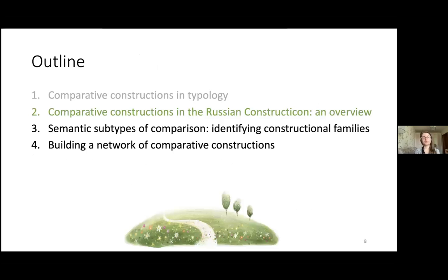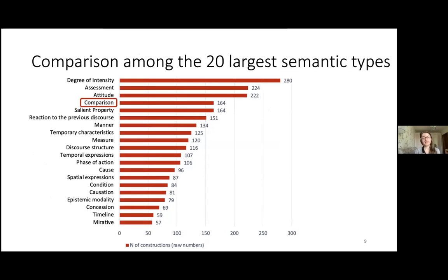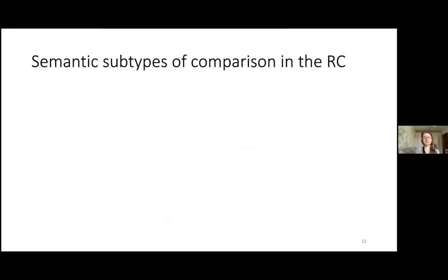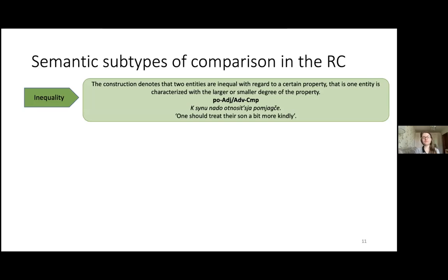Moving on to the data in the Russian Constructicon: the semantic type of comparison is among the 20 largest semantic types, including 164 comparative constructions. Within our classification, this semantic type is included in the large semantic class of Qualia, in the subgroup of properties, together with salient property and temporary characteristic. We distinguish five different subtypes of comparison in our resource.